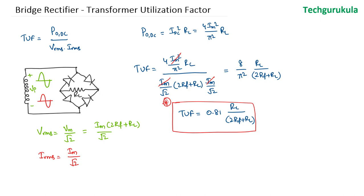So the maximum transformer utilization factor ideally can be 81%. Which means 81% of the secondary windings rating would be the output DC power.